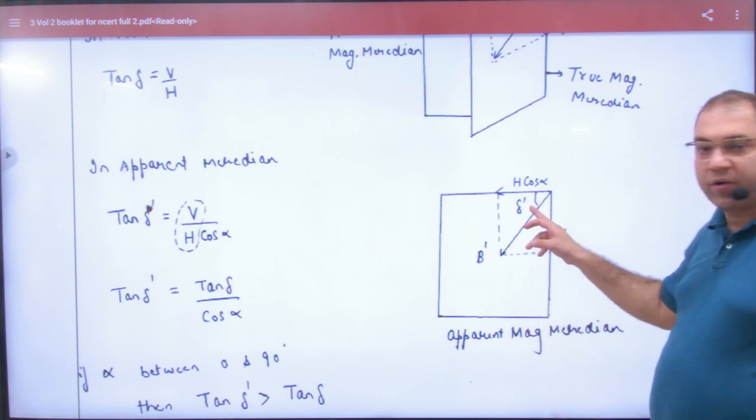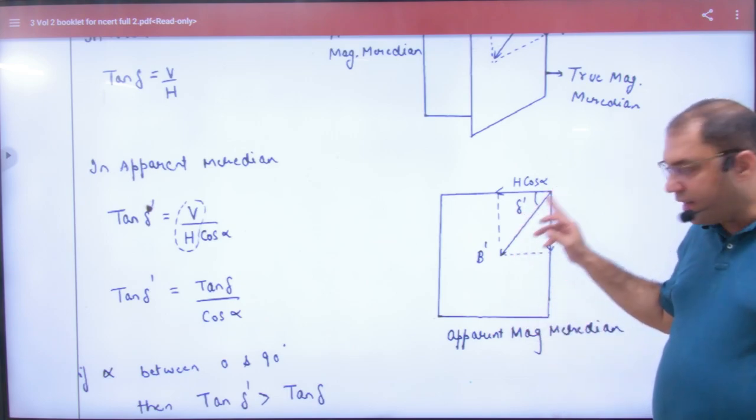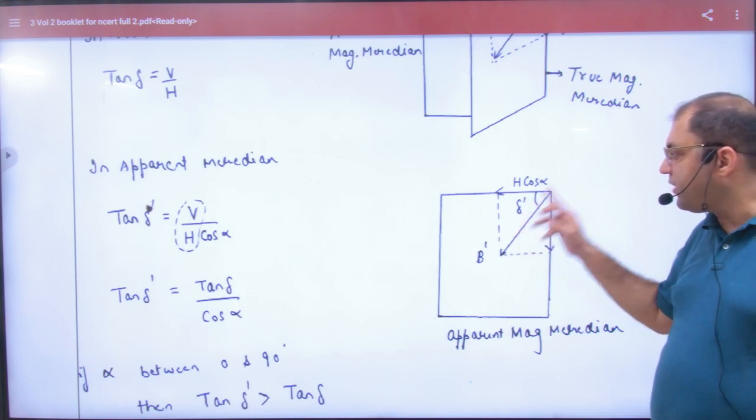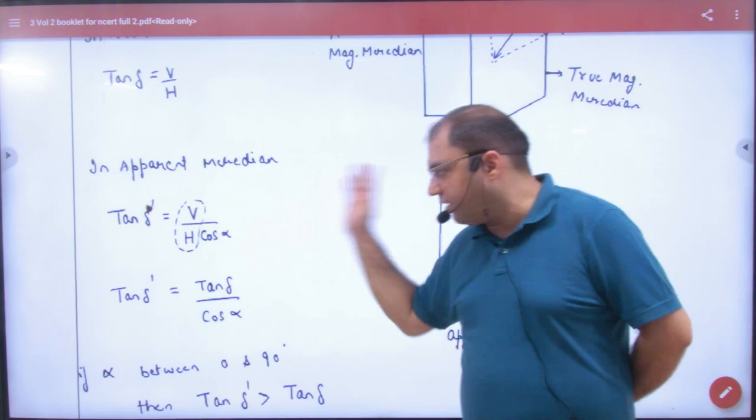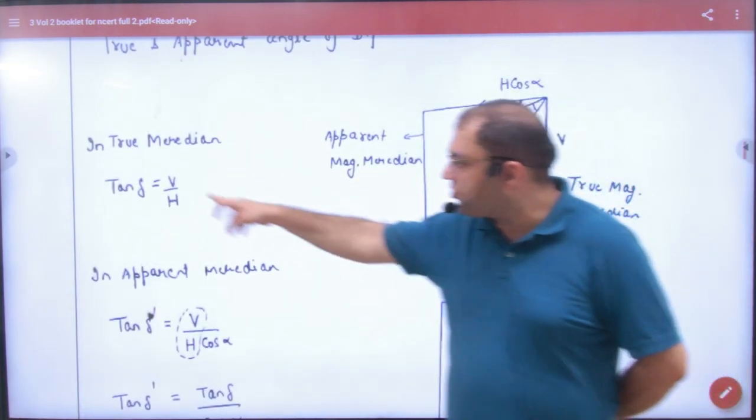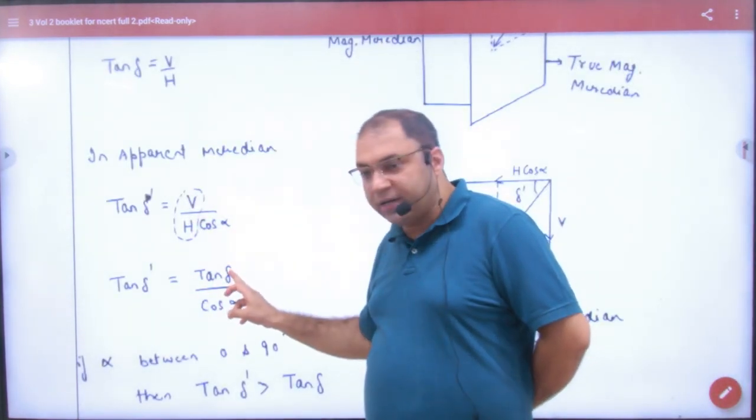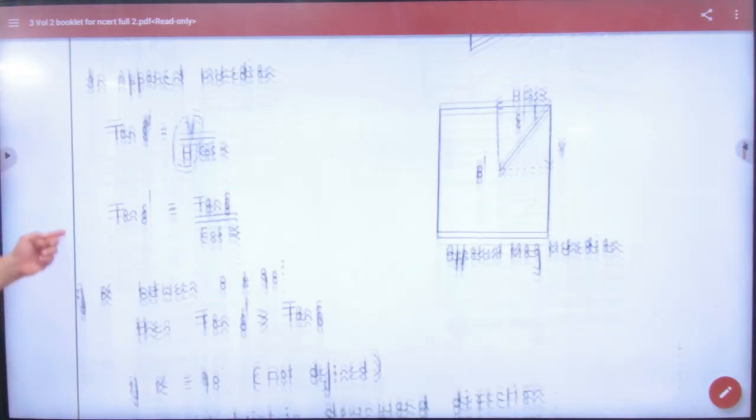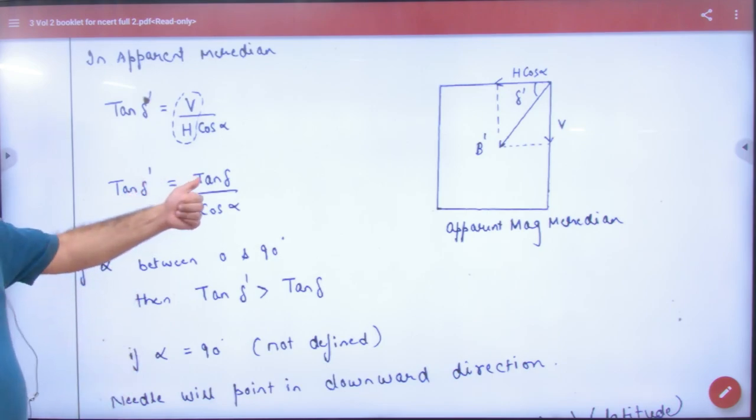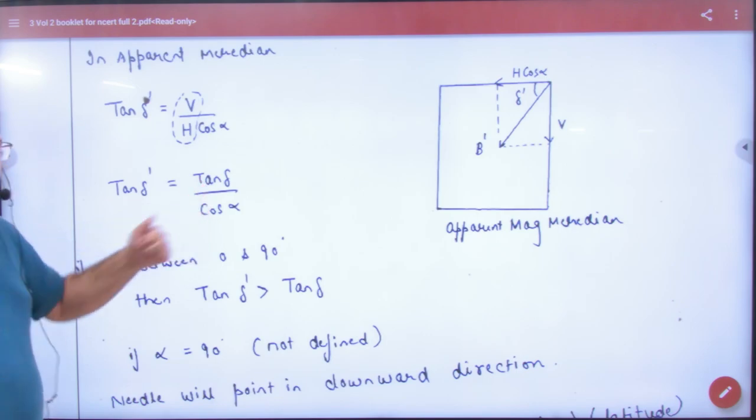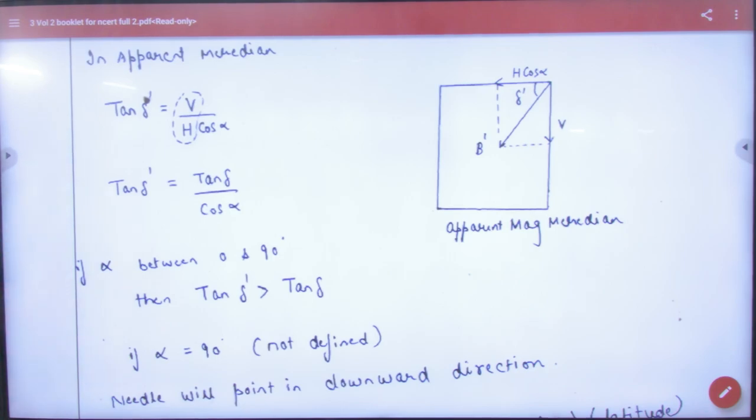So what is the new angle of dip here? Delta dash. So the new angle of dip delta dash, tan of delta dash is equal to vertical component V divided by H cos alpha. But V upon H is true angle of dip, tan delta. So tan delta dash ki value tan delta divided by cos alpha, formula booklet me note karay. True, apparent angle of dip delta dash hai, true angle of dip tan divided by cos of alpha where alpha is angle between two meridians. Ye note karay.